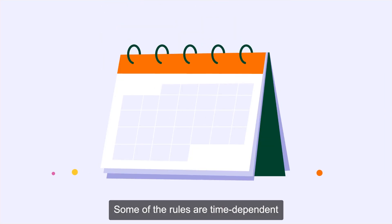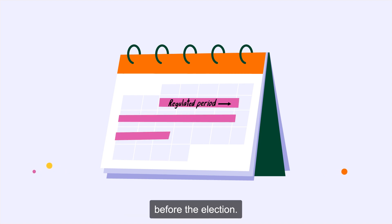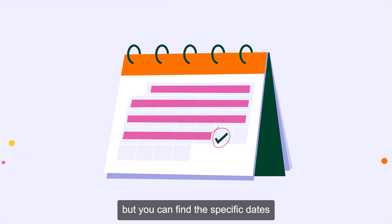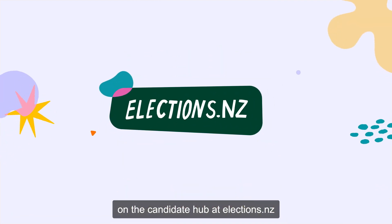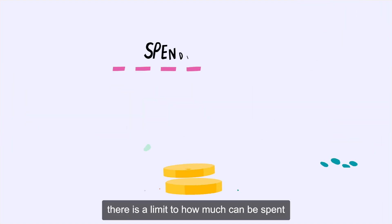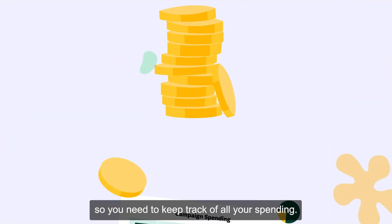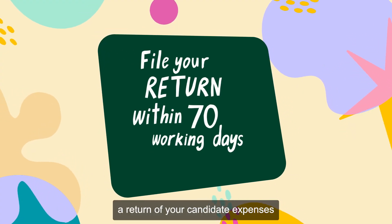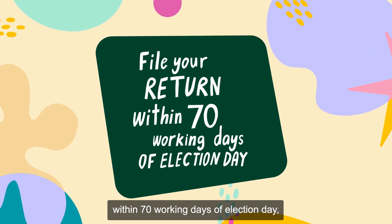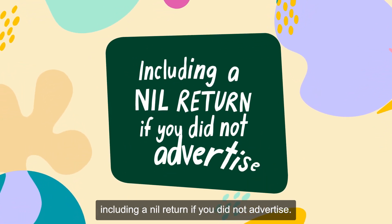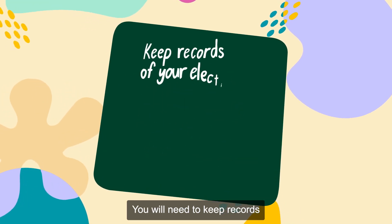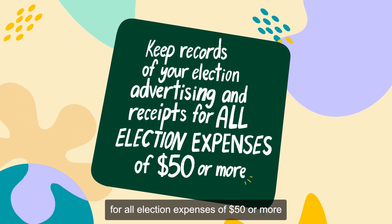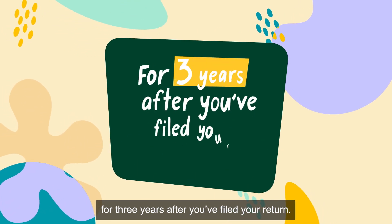Some of the rules are time dependent and there is a regulated period before the election. It is generally three months before election day, but you can find the specific dates on the Candidate Hub at elections.nz. During this period there is a limit to how much can be spent on candidate advertising, so you need to keep track of all your spending. You'll also need to file a return of your candidate expenses within 70 working days of election day, including a nil return if you did not advertise. You will need to keep records of your election advertising and receipts for all election expenses of $50 or more for three years after you filed your return.